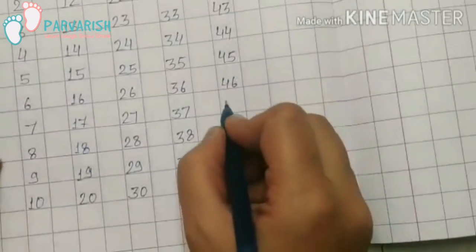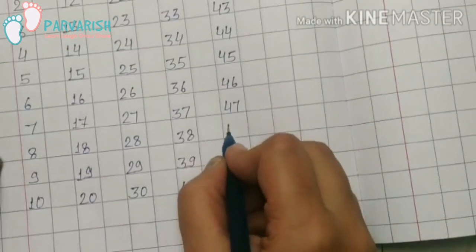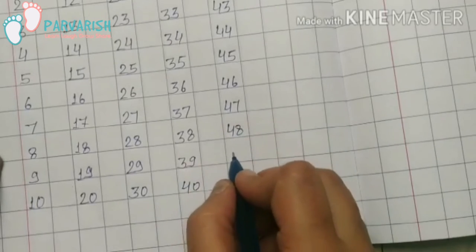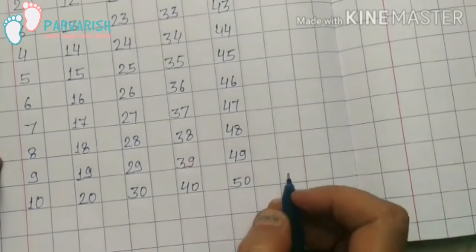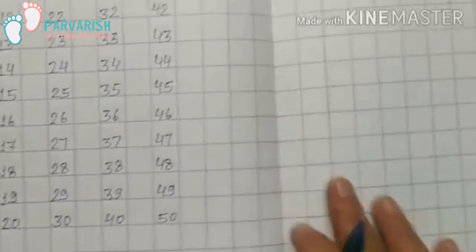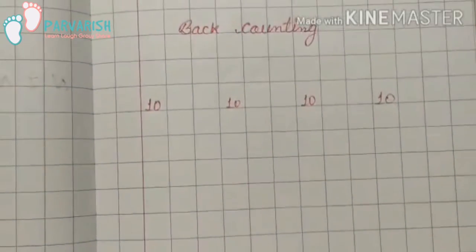4-6, 46; 4-7, 47; 4-8, 48; 4-9, 49; 5-0, 50. And now we will do back counting revision.